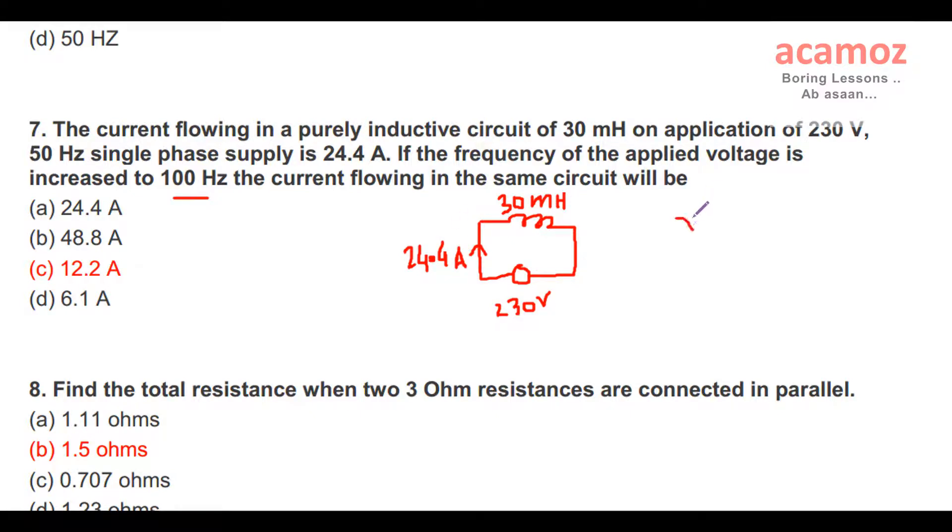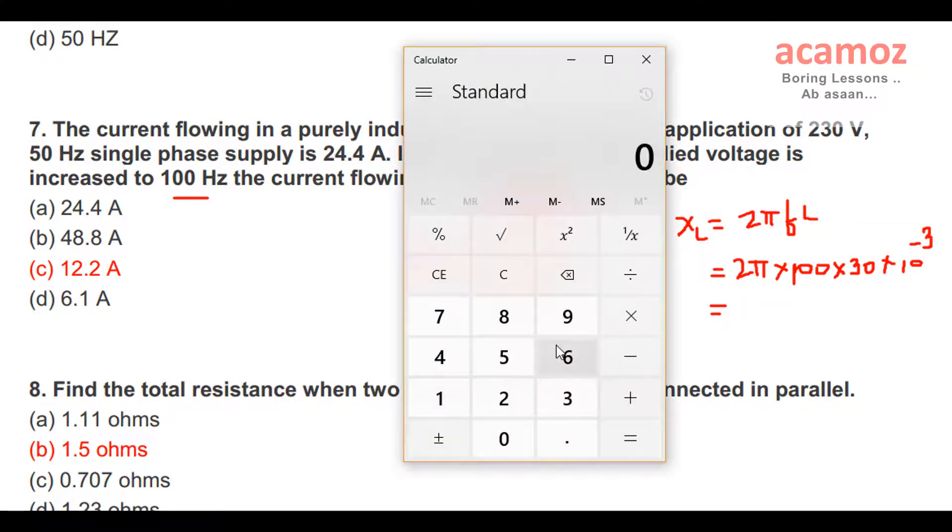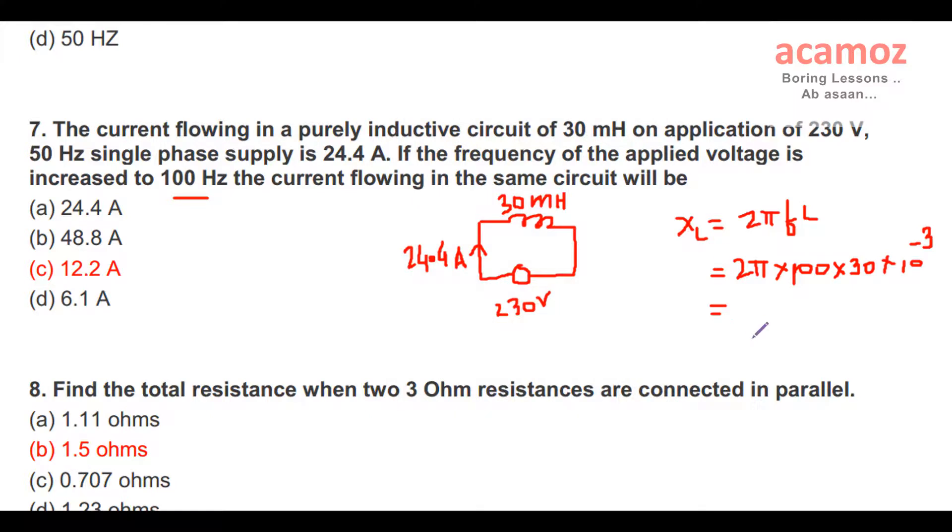Then inductive reactance is 2πfL, that is equal to 2π × 100 × 30 millihenry, and 30 × 10^-3. If we calculate this value, then the answer will be 18.84. 18.84 is the inductive reactance value.